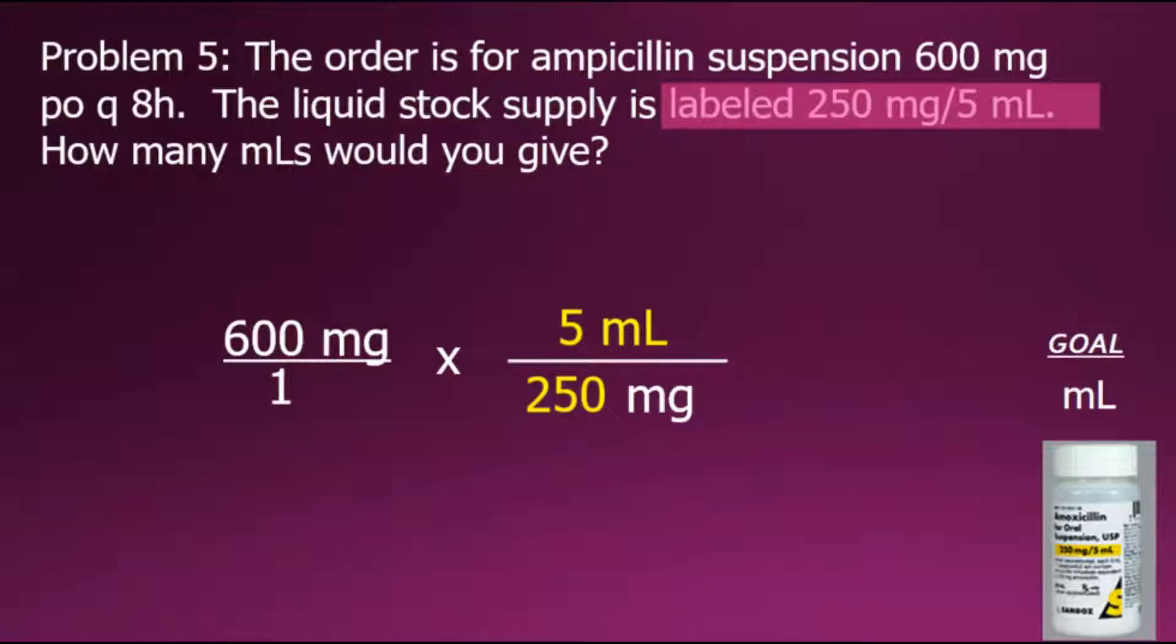When we perform the multiplication here, as we previously discussed, milligrams will cancel out with the quantity in the numerator over the same quantity in the denominator having a value of 1. To multiply fractions together, we multiply numerators, 600 times 5 for the new numerator, and 1 times 250 for the new denominator.